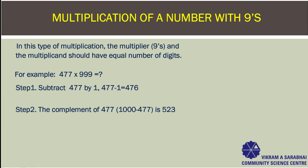Step 2: The complement of 477 is 523. That is 1000 minus 477 equals 523. Now, place the product of Step 1 — that is 476 — in the beginning, and the product of Step 2 — that is 523 — at the end. We get 476523. Hence, the answer will be 476523.